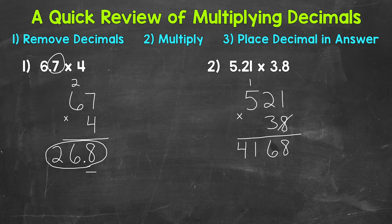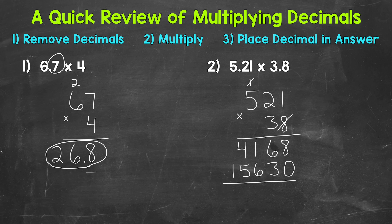We are done with the 8. So we're going to move over to the 3 — we're moving one place value to the left, so we need our placeholder 0 here. Now we multiply: 3 times 1 is 3, 3 times 2 is 6, and 3 times 5 is 15. Now we add: 8 plus 0 is 8, 6 plus 3 is 9, 1 plus 6 is 7, 4 plus 5 is 9, and then we have a 1.